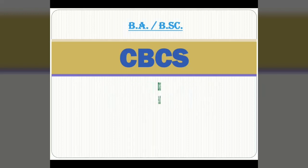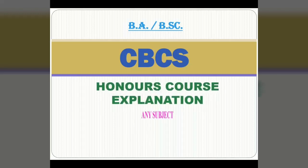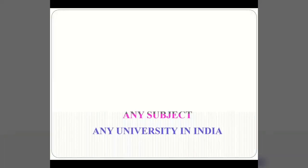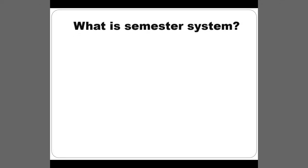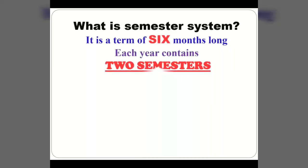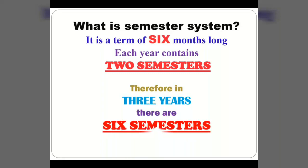What about honours courses in any subject, in any university in India? The question is: what is the semester system? It is a term 6 months long. Each year contains 2 semesters. Therefore, in 3 years, there are 6 semesters in total.